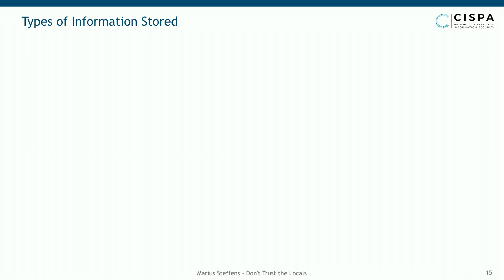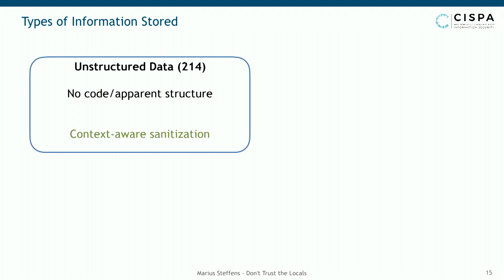The first class: the developer wanted to store some textual data in the client-side database — just a piece of text — and then used an insecure sink to display it. The fix is to resort to a safer sink alternative: instead of innerHTML, use innerText or a context-aware sanitization. We found this category present on 214 domains.